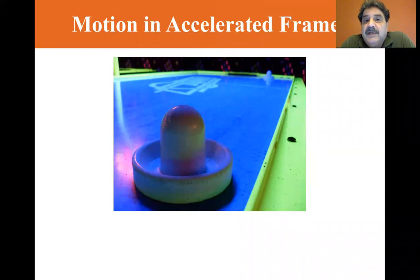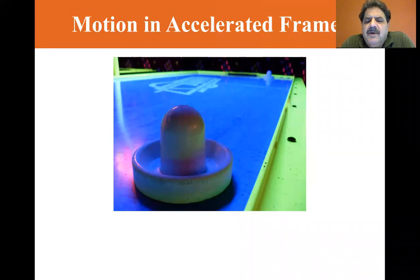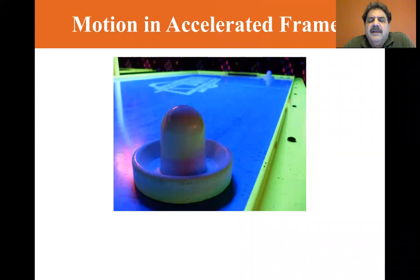The accelerating train is not an inertial frame. The observer on the train sees no apparent force on the puck, yet it accelerates from rest toward the back of the train. It appears to violate Newton's first law.